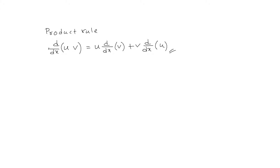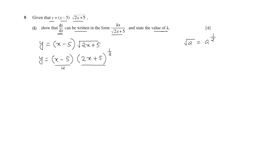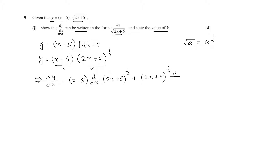We are going to use this product rule in our original problem. Let x minus 5 be u, and 2x plus 5 whole to the power half be v. Applying the product rule, dy over dx equals x minus 5 times d over dx of 2x plus 5 whole to the power half, plus 2x plus 5 whole to the power half times d over dx of x minus 5.